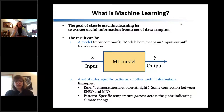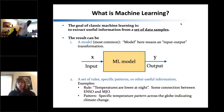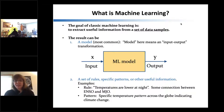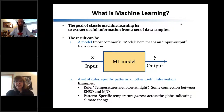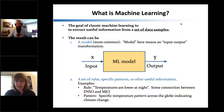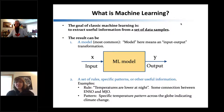The goal of classic machine learning is to extract useful information from a set of data samples. The result can be a model, a set of rules, patterns, or other useful information — most commonly some kind of model. Here, model simply means an algorithm that takes some input x and converts it to some output y. The machine learning model basically learns from data what this input-output relationship is.